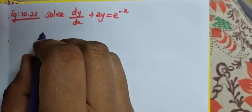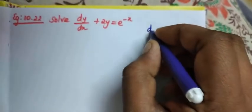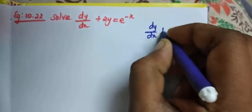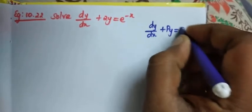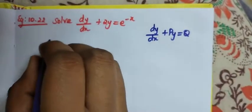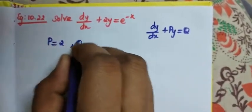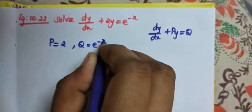Welcome to exam 10.22, solve dy/dx + 2y = e^(-x). This is of the form dy/dx + py = q. Now compare with this equation: our p is equal to 2 and q is equal to e^(-x).